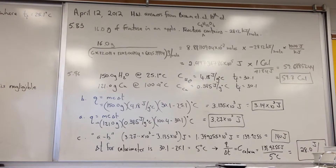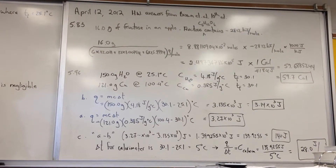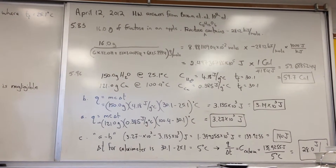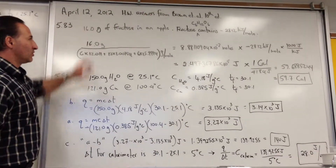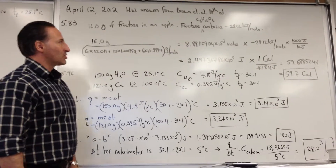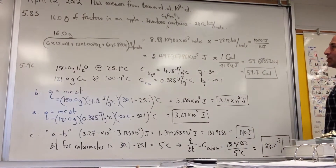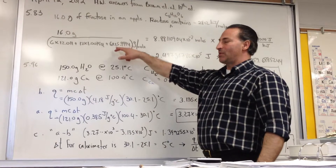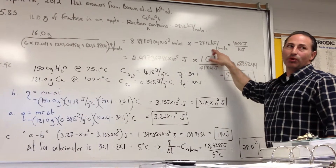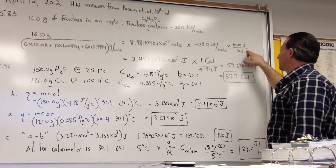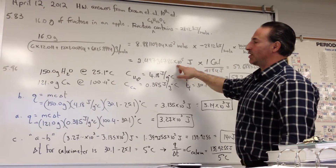In the first question, it's a simple conversion: a certain amount of fructose is found in an apple, and we're trying to calculate the food energy value of that amount of fructose. We're told that there's 16 grams of fructose in an apple, and that fructose contains 2,800 kilojoules per mole of energy. So we find how many moles 16 grams of fructose is, then multiply by the number of kilojoules per mole, and convert to joules by multiplying by 1,000 joules per kilojoule.